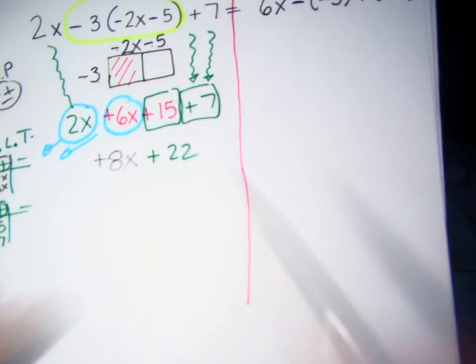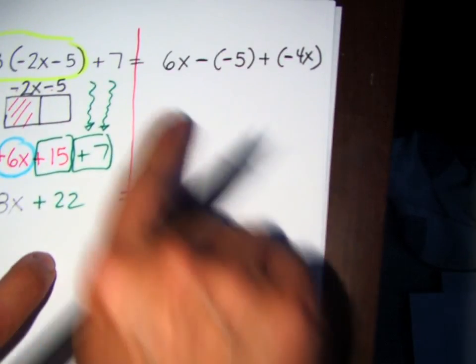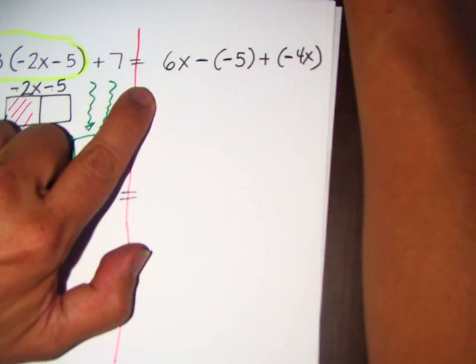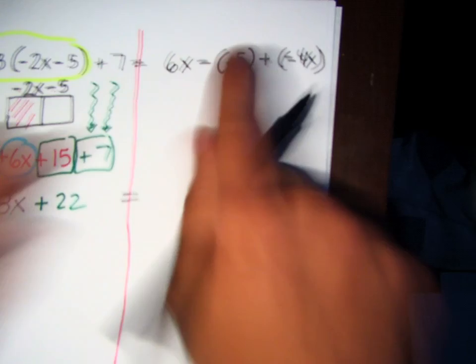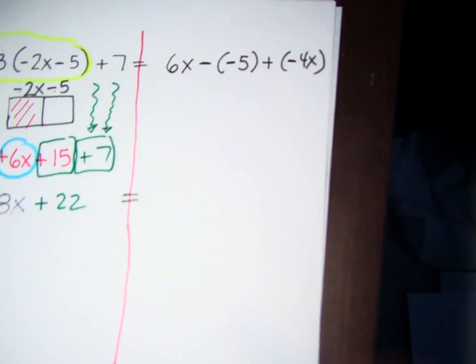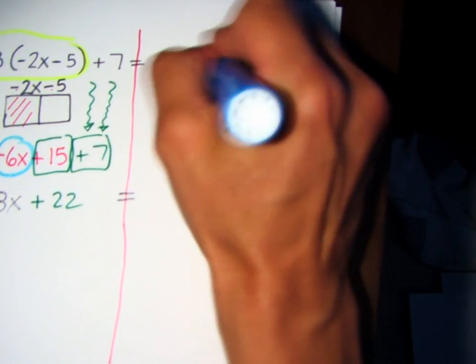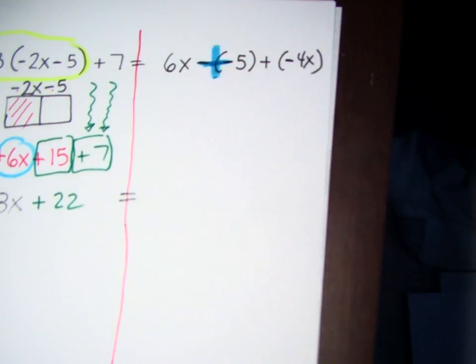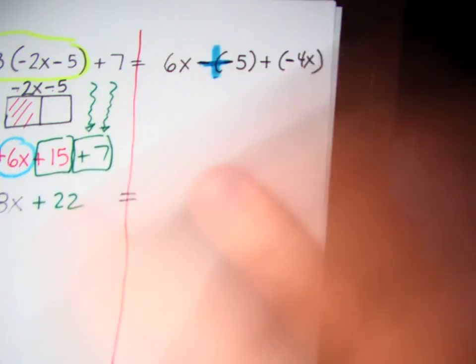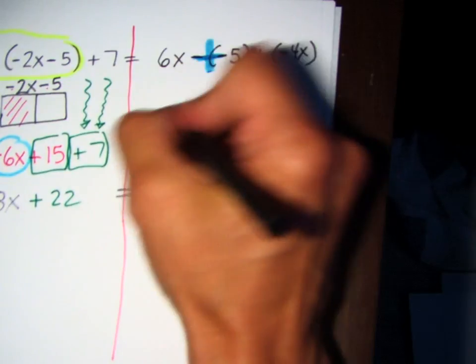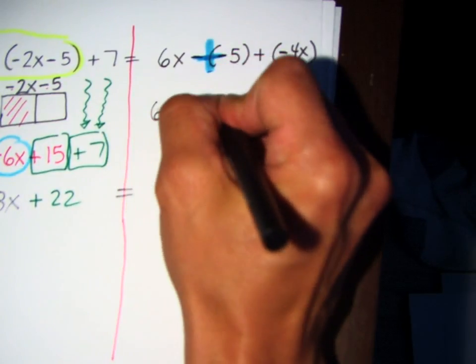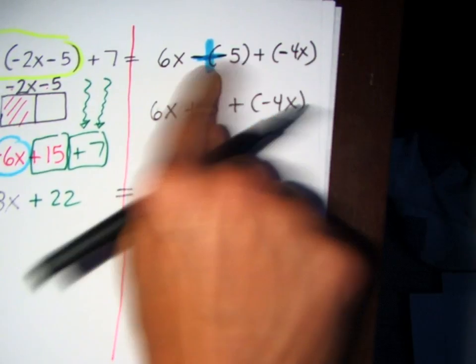So now we're going to go to the other side. Don't forget the equal sign. Very good. So now I'm going to look here and check it out. 6x minus — parenthesis — a minus 5, plus a minus 4. Leave it alone. So we're going to leave it alone and rewrite it: 6x plus 5 plus negative 4x. So I'm done with the multiplication.